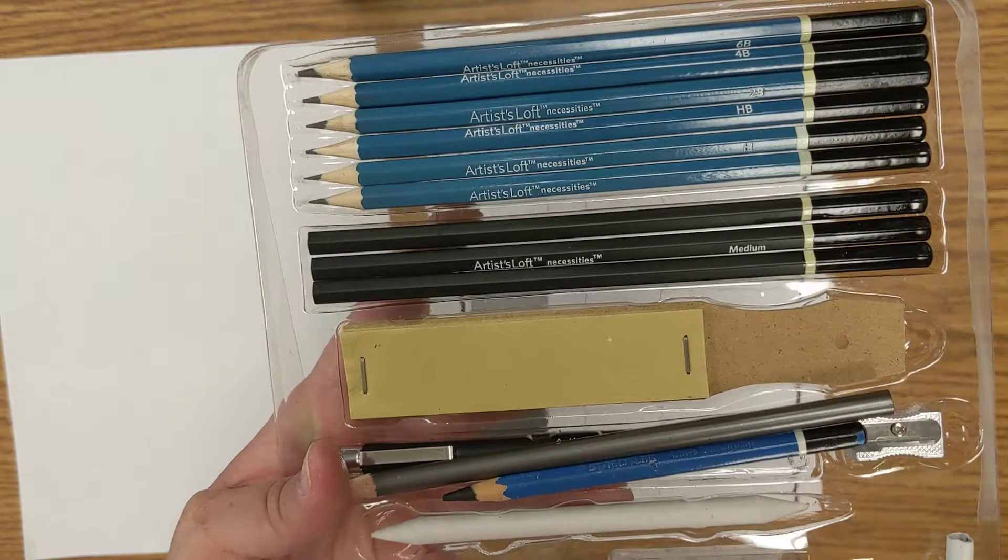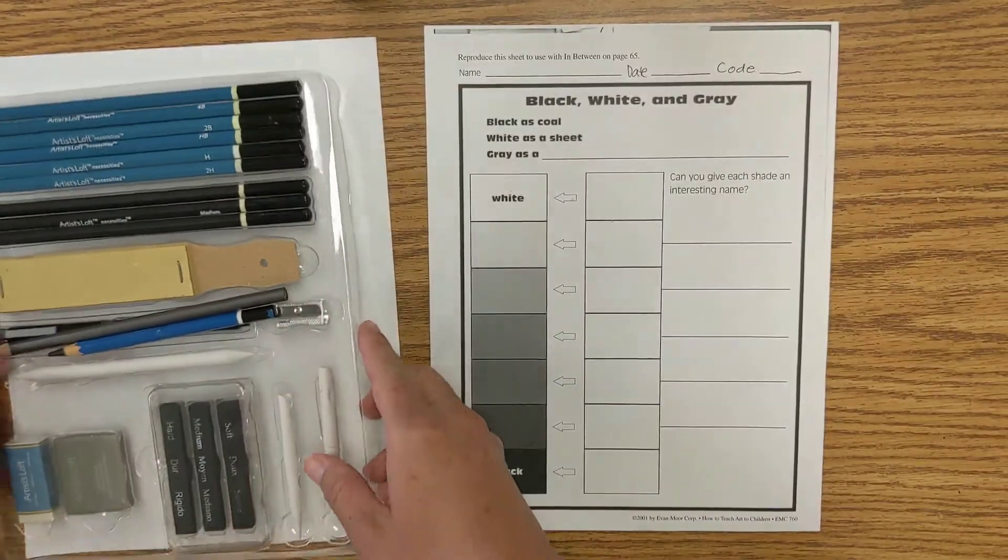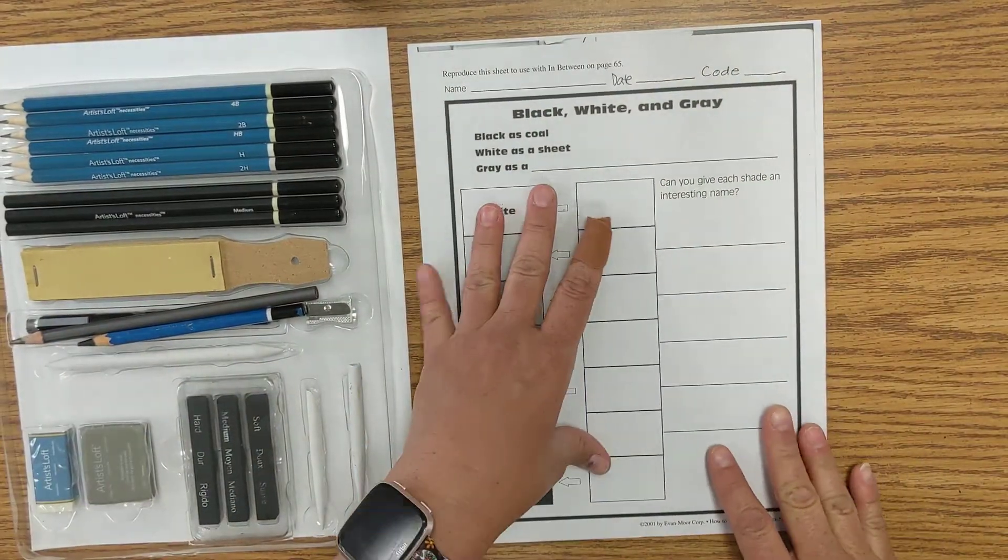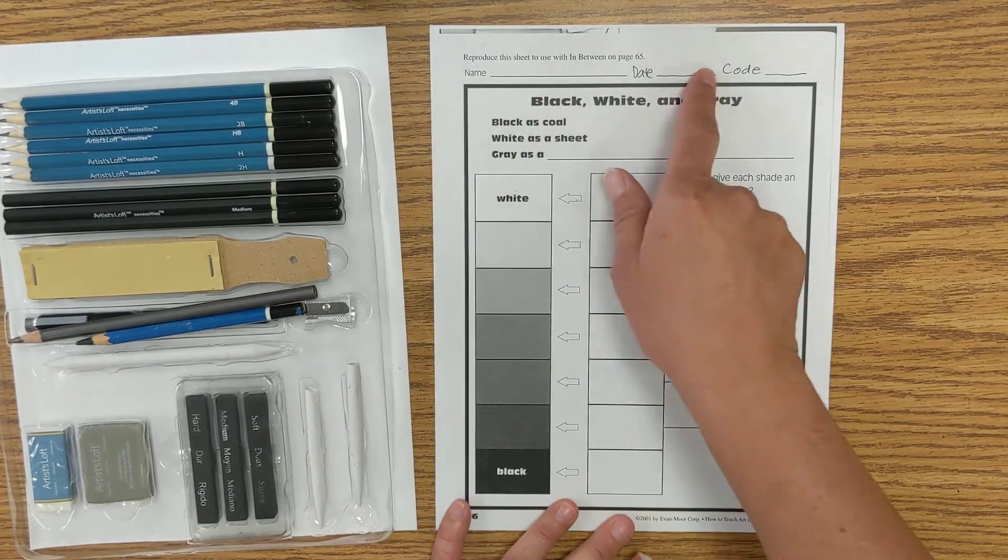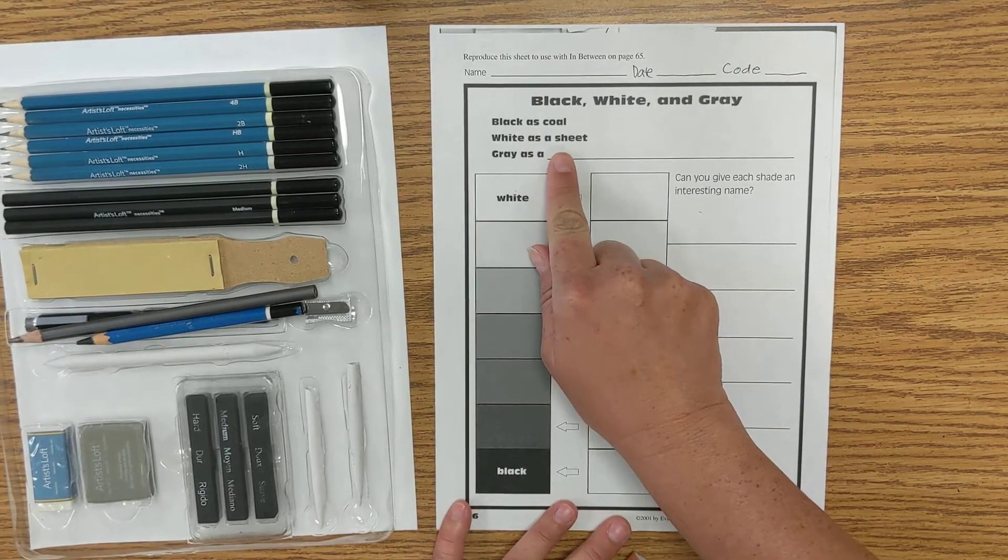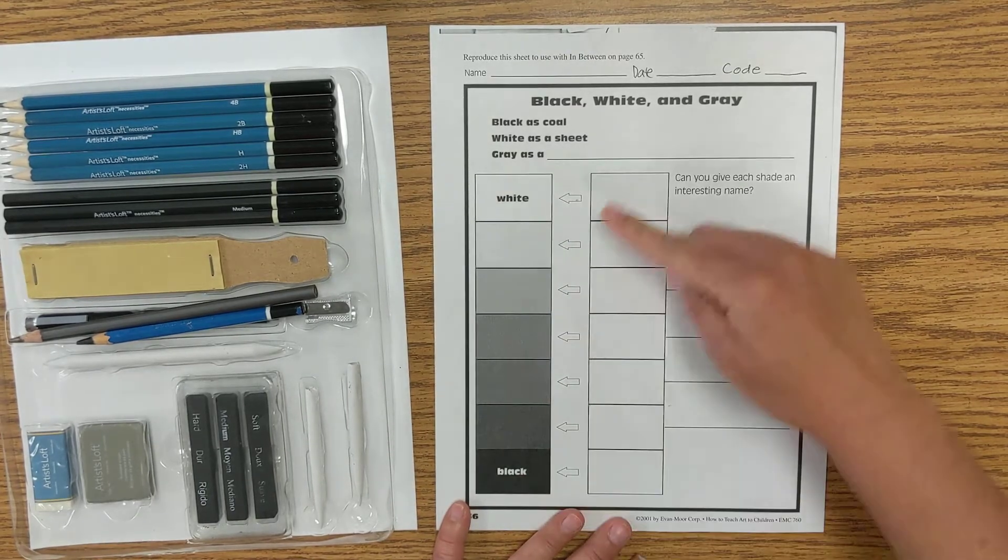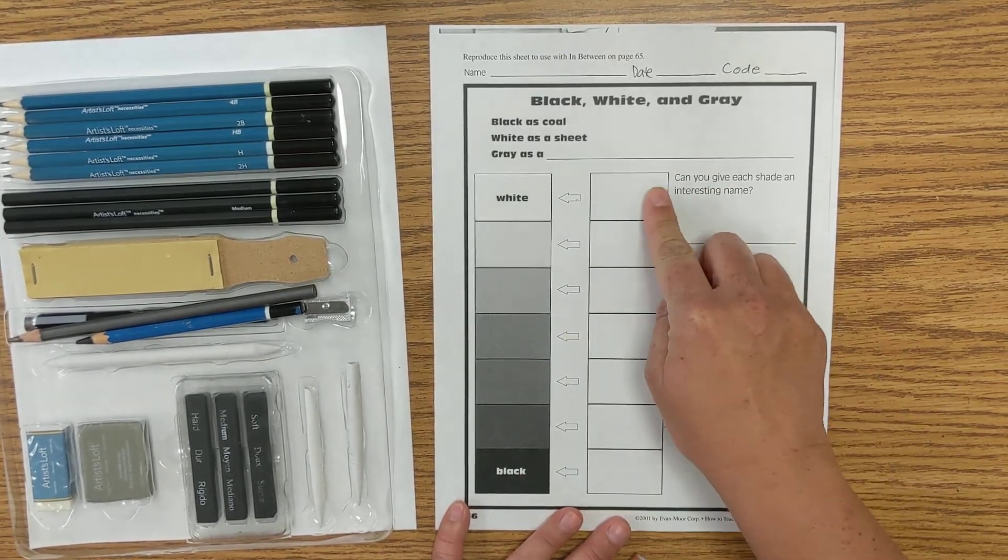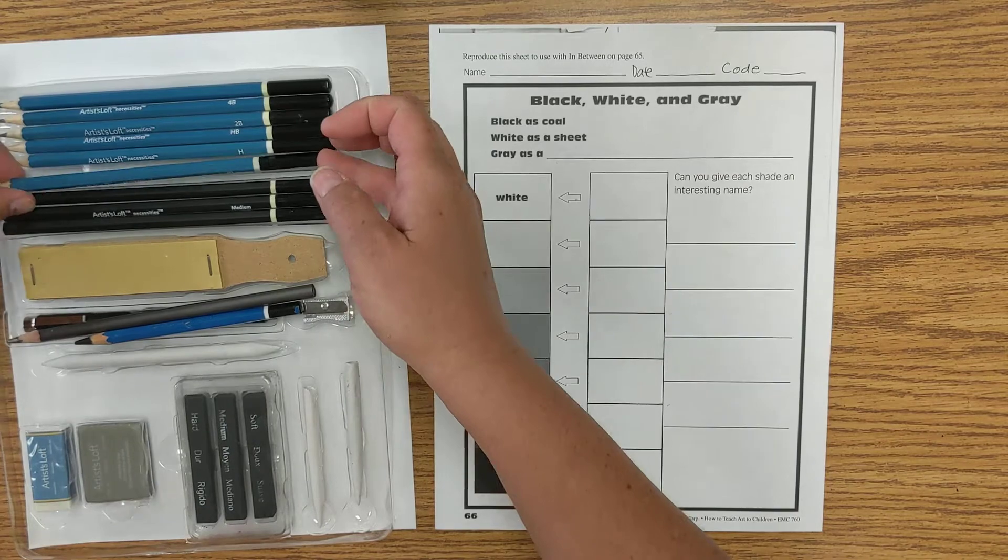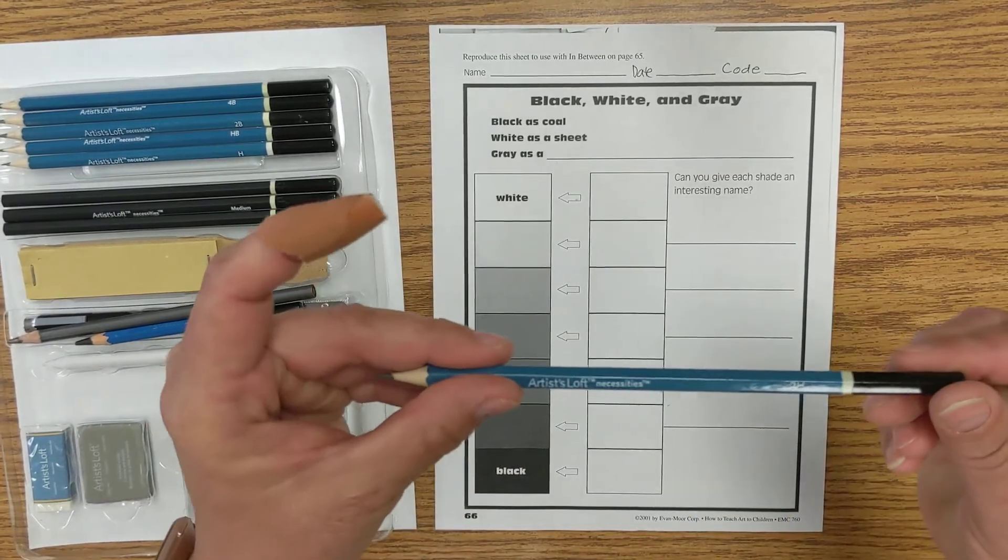So I'm going to do this sheet here, Black White and Gray. Don't forget to put your name. Black is coal, white as a sheet, gray as a what. So basically I want you to copy this here. Obviously white will just stay there, but this is my 2H pencil, this is the lightest pencil I have.